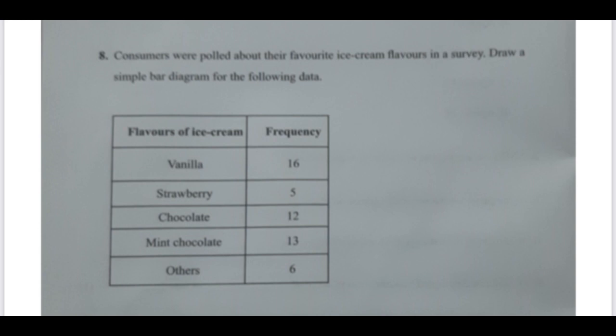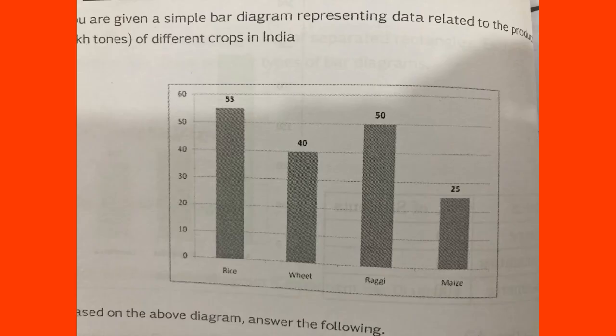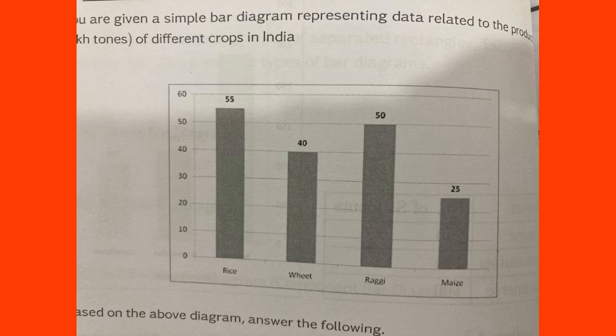We draw a simple bar diagram for that example. We have an x-axis and a y-axis. On the x-axis, we plot the flavors — strawberry, vanilla, and all the others. In the vertical area, if you have frequency values of 2, 4, 6, 8, you mark them accordingly, because our values are in the same range. This is how you draw a simple bar diagram.